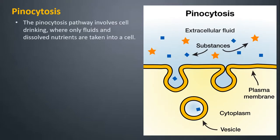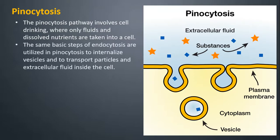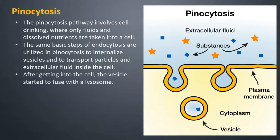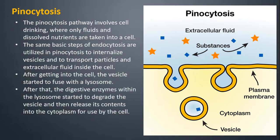Pinocytosis: The pinocytosis pathway involves cell drinking, where only fluids and dissolved nutrients are taken into a cell. The same basic steps of endocytosis are utilized in pinocytosis to internalize vesicles and to transport particles and extracellular fluid inside the cell. After getting into the cell, the vesicle starts to fuse with a lysosome. After that, the digestive enzymes within the lysosome degrade the vesicle and release its contents into the cytoplasm for use by the cell.